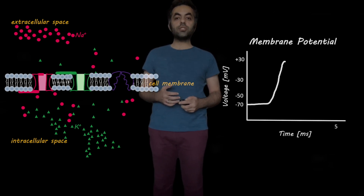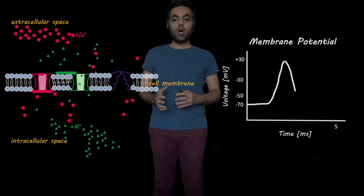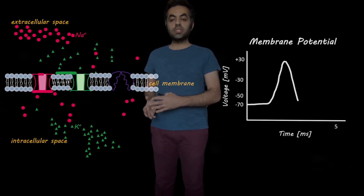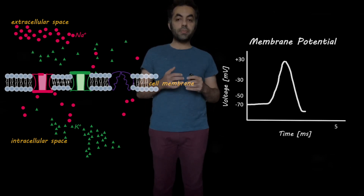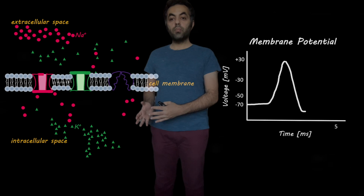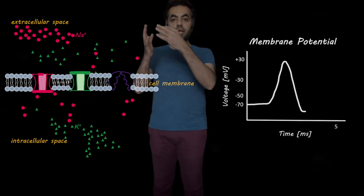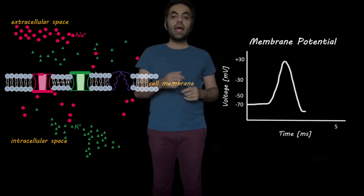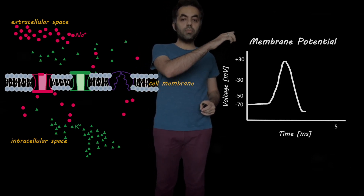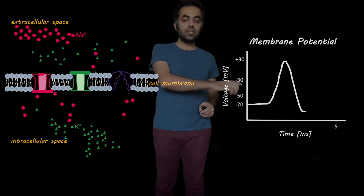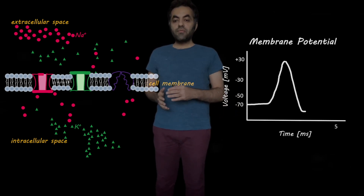But the potassium channels are still open, and therefore more potassium ions can move from the intracellular space to the extracellular space — which means more positive charges moving from the intracellular space to the extracellular space. And therefore the membrane potential falls from plus 30 to minus 70.